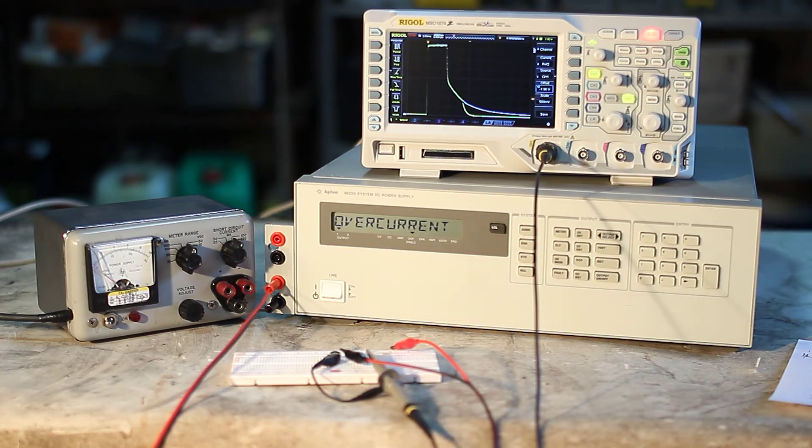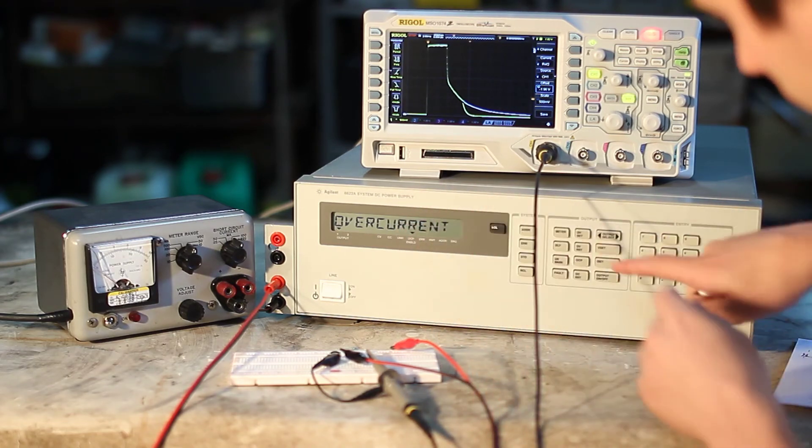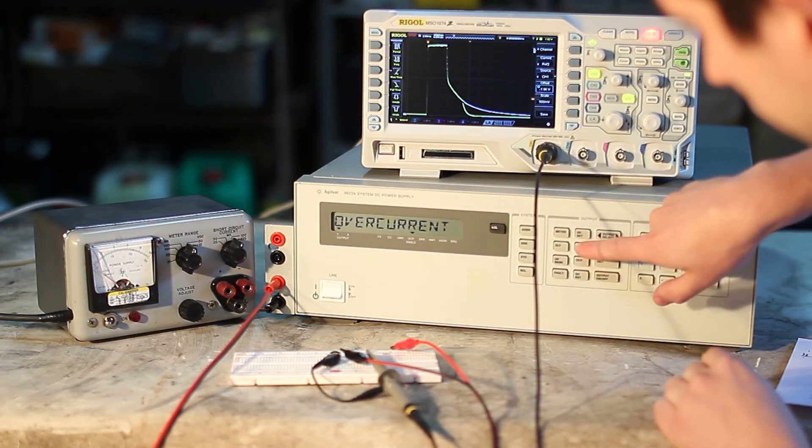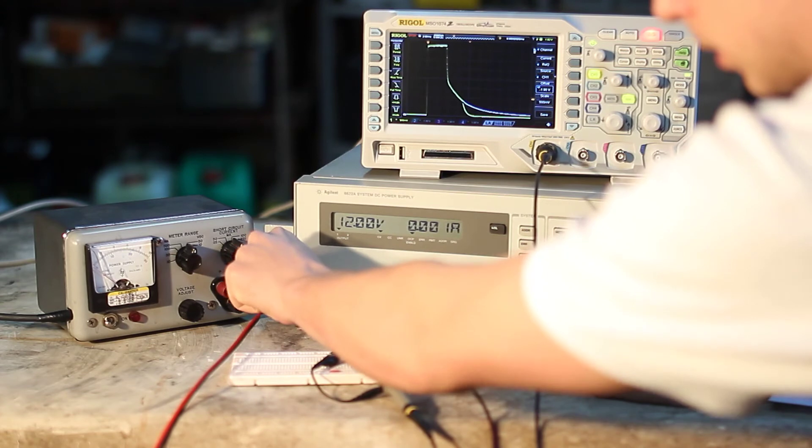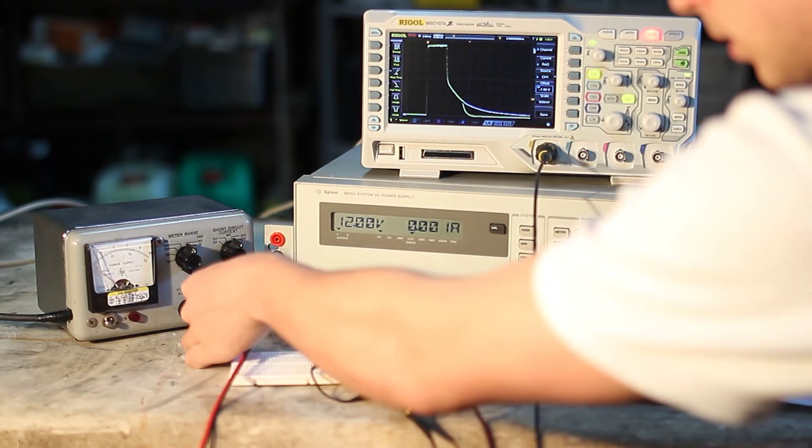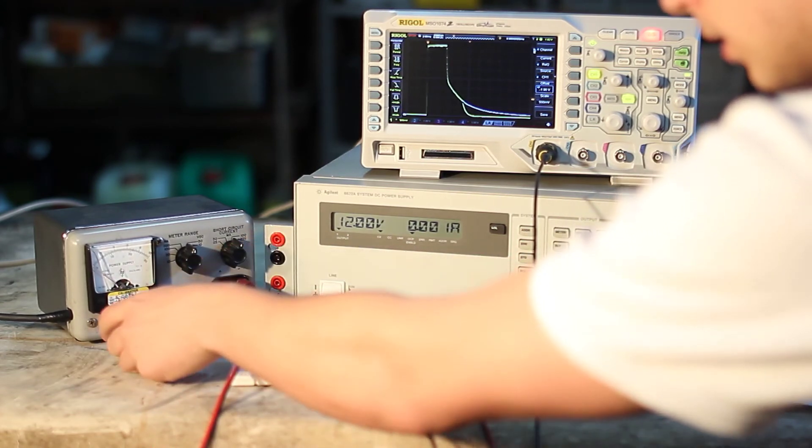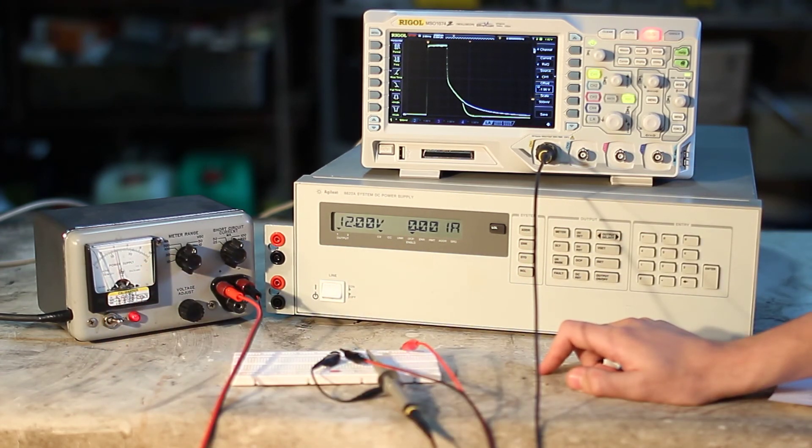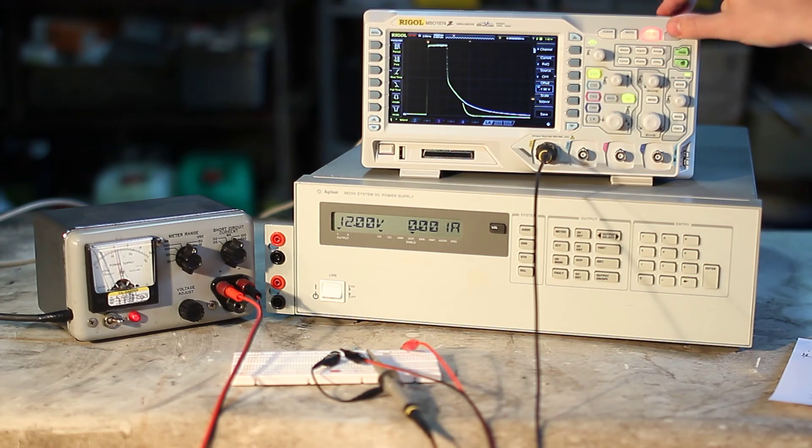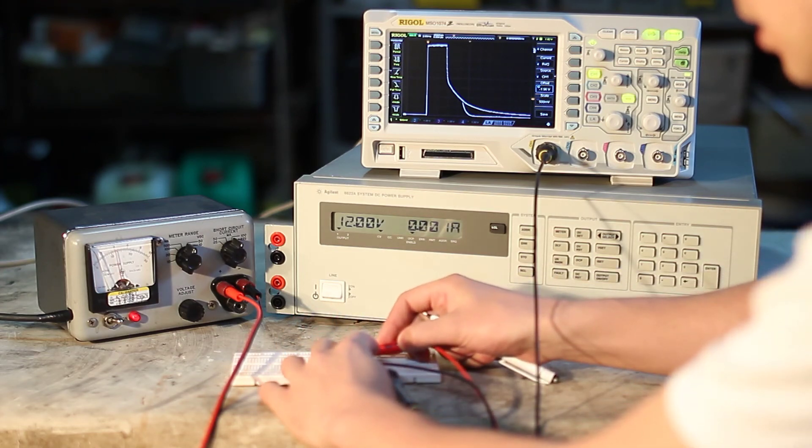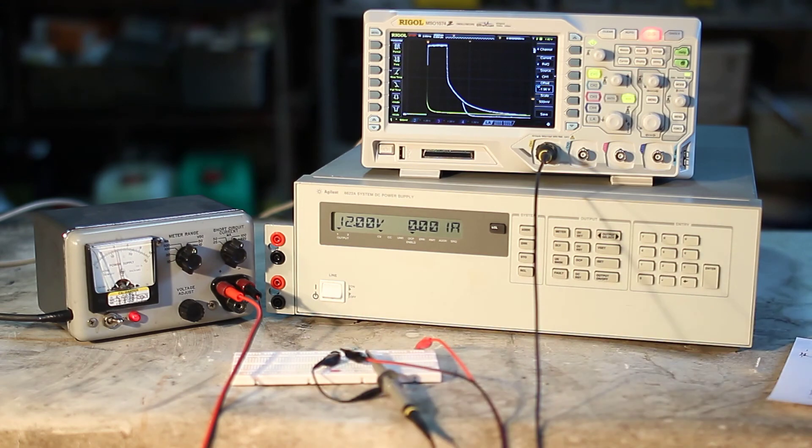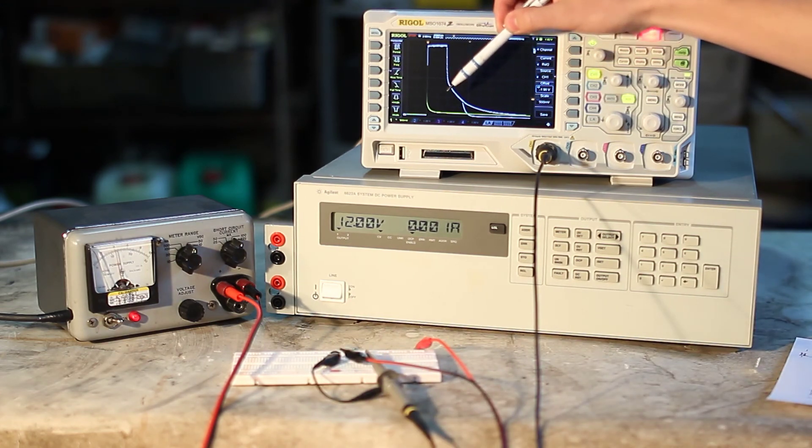Now, let's try the other power supply. Now, the current transient is much smaller, as we expected.